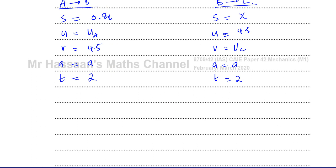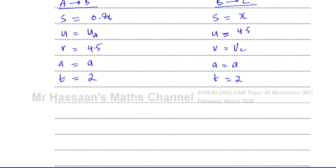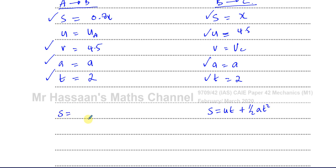Now we can put the values into equations. For A to B I'm dealing with S, V, A, and T, so I'll use S = VT − ½AT². For B to C I'm dealing with S, U, A, and T, so I'll use S = UT + ½AT². The equation S = VT − ½AT² is not in the formula sheet but is one of the equations of motion — similar to S = UT + ½AT² but expressed using final velocity.